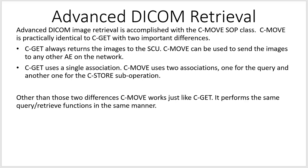Advanced DICOM image retrieval is accomplished with the C-MOVE SOP class. C-MOVE is practically identical to C-GET with two important differences. C-GET always returns the images to the SCU; C-MOVE can send the images to any other AE on the network. So if I want to move images from the archive to a different workstation — one that I'm not sitting at — I have to use C-MOVE. I can move images from the archive to the PACS CD burner even if I'm not right at the CD burner.